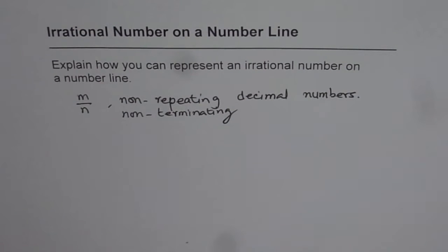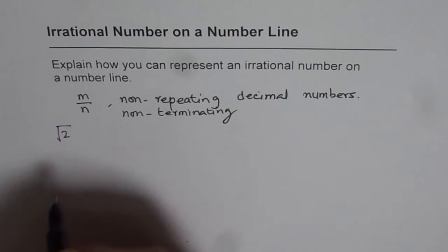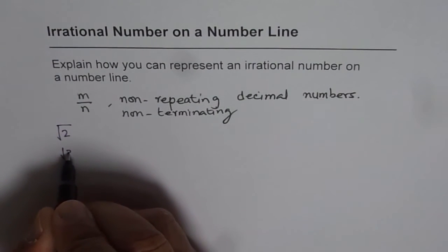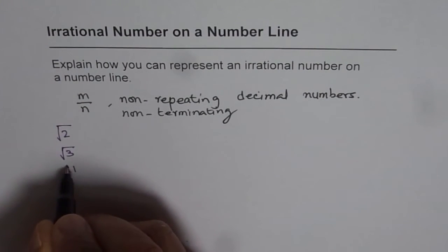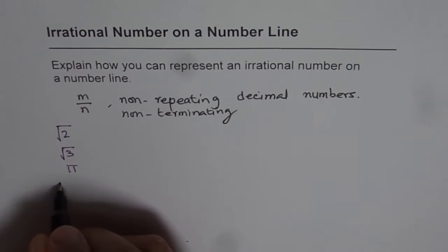Now to give you an example, we could think about numbers like square root of 2, square root of 3, these numbers, pi, these are all irrational numbers. So if you try to find their value, you will not get exact value. But they all are real numbers.